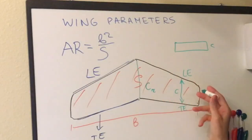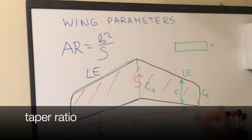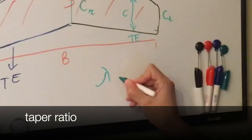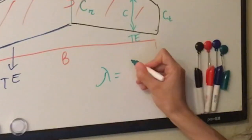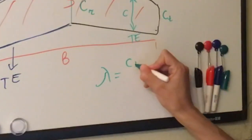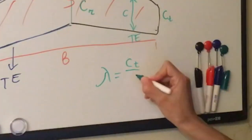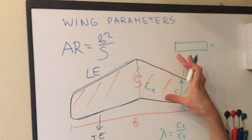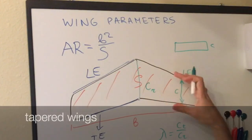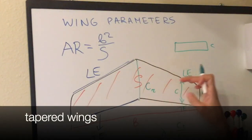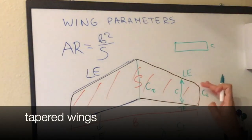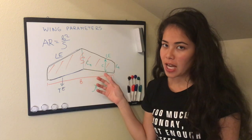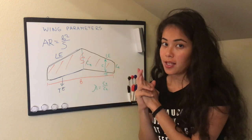For most aircraft the chord changes its length from the root to the tip, and this change is called the taper, denoted by lambda (λ). It is equal to ct divided by cr. So when you see most wings, they are called tapered wings. These are the basics of wing parameters from the top view.